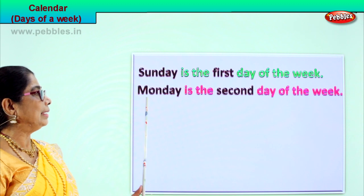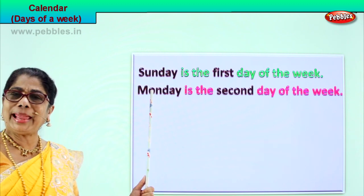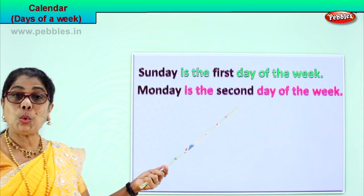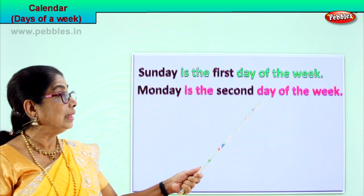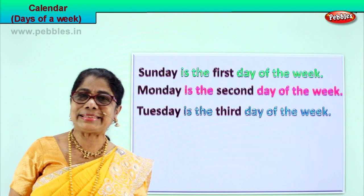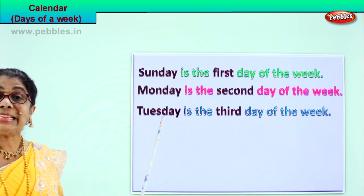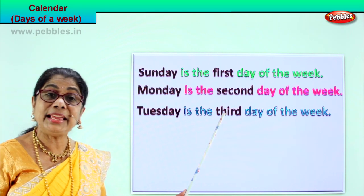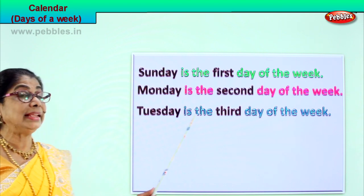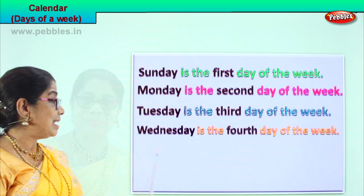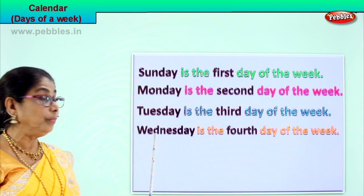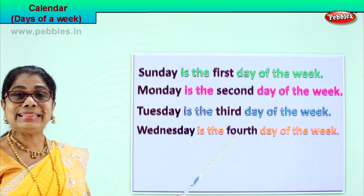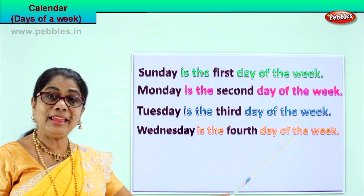Next, spell Monday. M-O-N-D-A-Y. Monday is the second day of the week. Spell second. S-E-C-O-N-D. Monday is the second day of the week. Wednesday is the fourth day of the week. Spell fourth. F-O-U-R-T-H. Wednesday is the fourth day of the week.